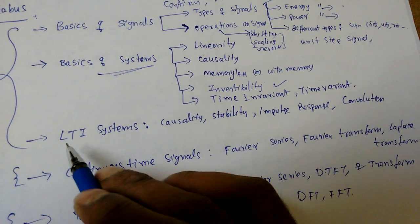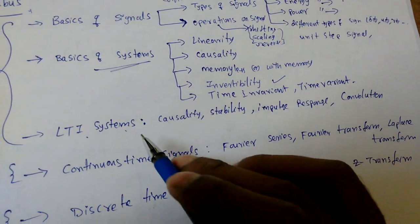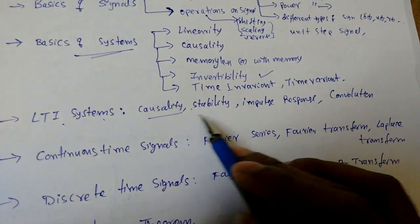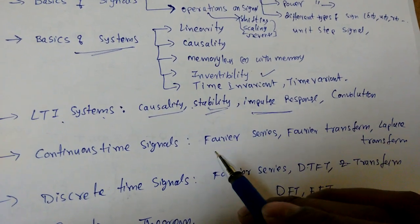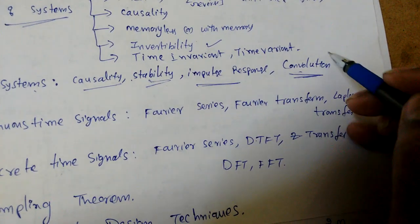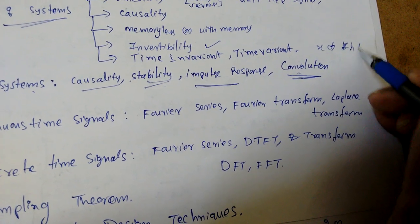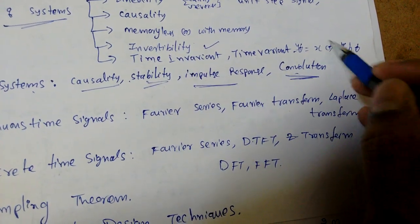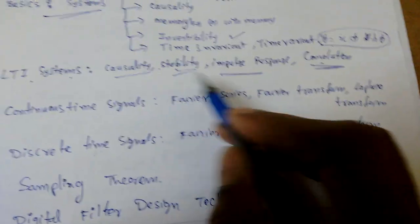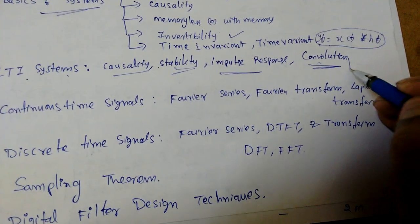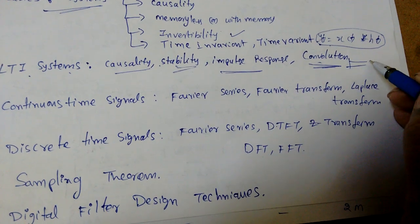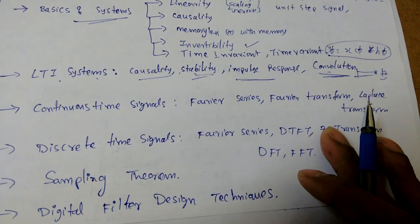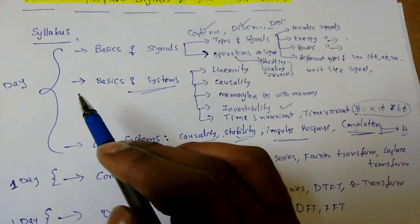The next topic is LTI systems — Linear Time-Invariant systems. Again we have the same properties: linearity, causality, stability, and impulse response. A very important topic is convolution between two signals: x(t) convolved with h(t) equals y(t), the output response. We need to learn the convolution procedure for signals such as an exponential signal convolved with a step signal.